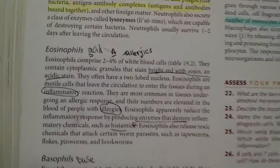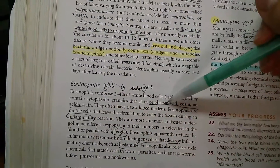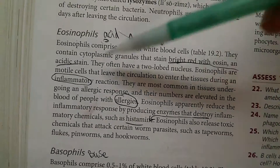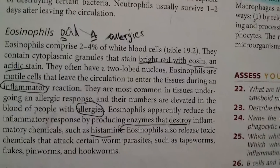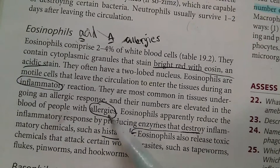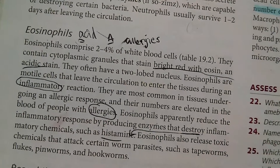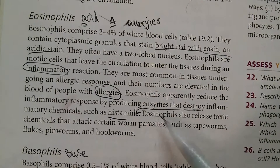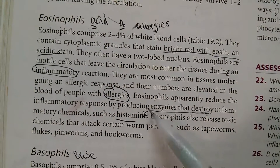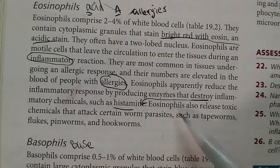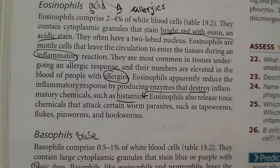Eosinophils stain with an acidic stain, turning bright red under the microscope. They tend to enter tissues during an inflammatory reaction, generally from an allergy like a bee sting. You'll find more eosinophils in your bloodstream during an allergic reaction, and people with allergies generally have a higher eosinophil count. They try to destroy inflammatory chemicals such as histamine, which increases inflammation. Eosinophils are also useful for attacking parasites and worms.